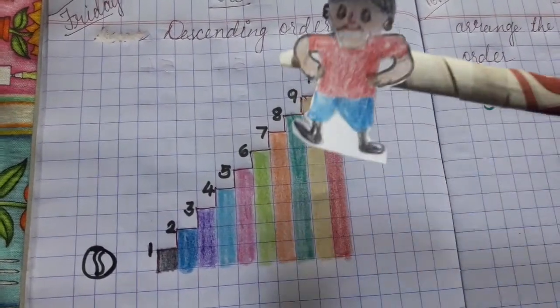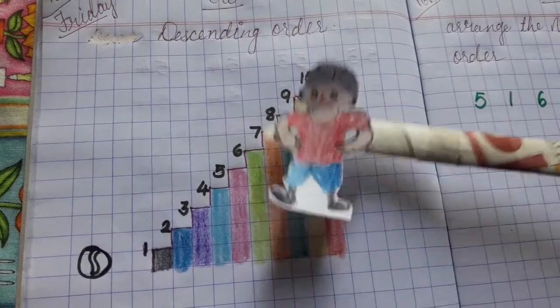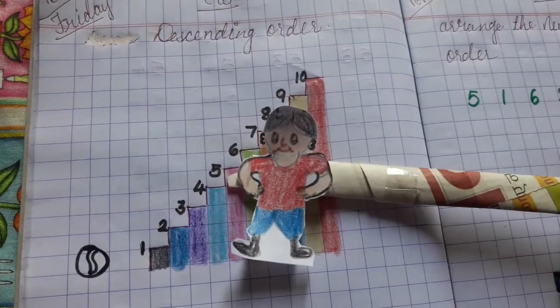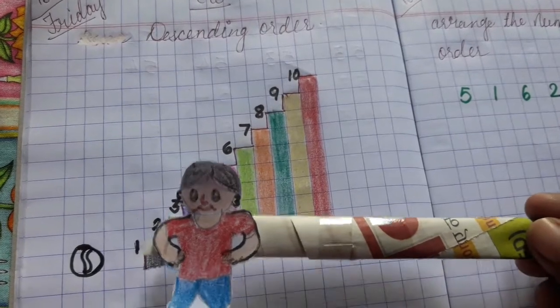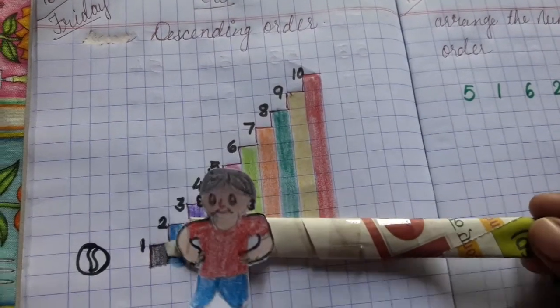10, 9, 8, 7, 6, 5, 4, 3, 2, 1. Finally, he gets his football.